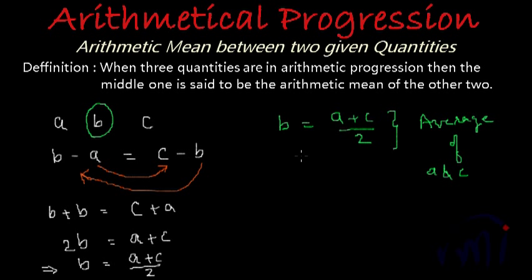So if we are asked to find the arithmetic mean of two given numbers like 2 and 8, and if we are supposed to find the arithmetic mean of these two numbers, it will be equal to 2 plus 8 divided by 2, which is 10 by 2 and this is equal to 5. So arithmetic mean of 2 and 8 will be 5.